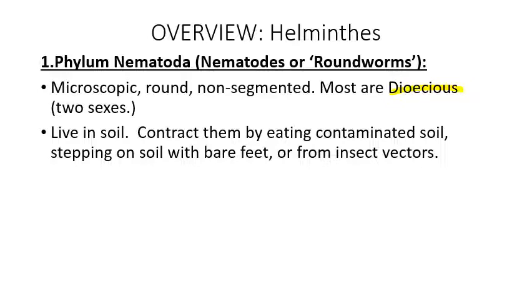Dioecious means there are two sexes. The human race is dioecious, and many species of trees are either dioecious or monoecious. Many nematodes live in the soil — that's the reservoir. Humans usually contract them by eating food contaminated with soil, stepping on soil with bare feet, or being bitten by an insect that acts as a biological vector.